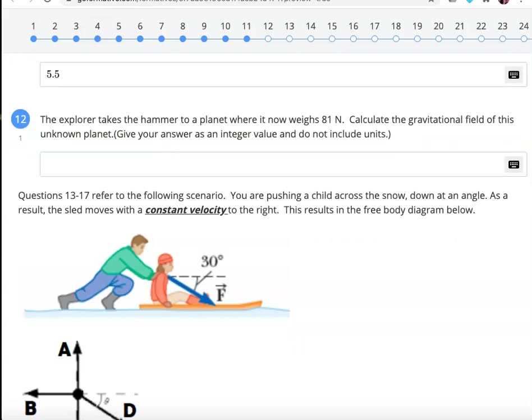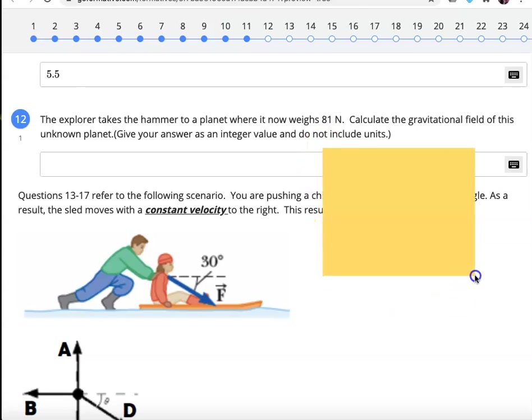Now we take the hammer to a planet where it weighs 81 newtons. On that planet, I'm still doing FG equals MG. But now I have to use my mass from before. 81 equals 5.5 G. Divide by 5.5 to both sides. And that gets something like, I don't remember off the top of my head. I think it's like 14.7.